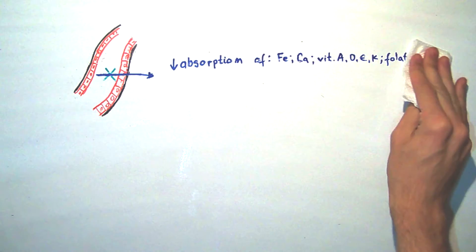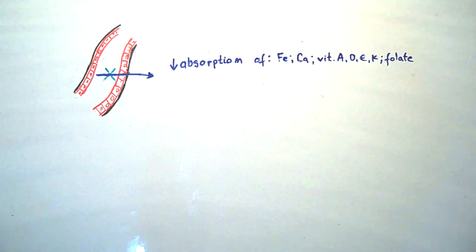This damage of small intestines leads to reduced absorption of iron, calcium, vitamins A, D, E, K and folate. Okay, why the big deal? Why has everyone heard about it in one way or another? Well, there are two reasons.